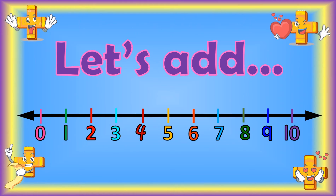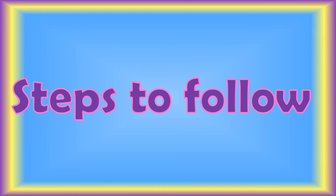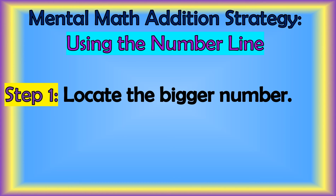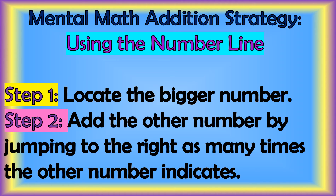Let's add using the number line. Before we begin, here are the steps to follow for addition using the number line. Step 1: locate the bigger number. Step 2: add the other number by jumping to the right as many times as the other number indicates.